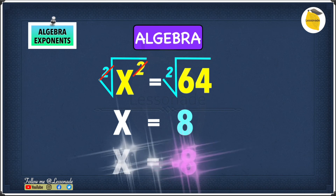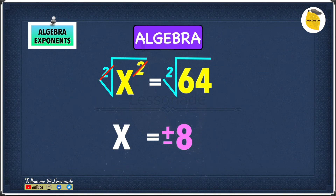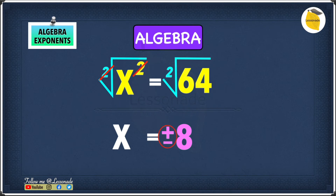So in this example we have two answers: x equals 8 and x equals minus 8. You may wonder which is correct — the answer can be both, because x equals 8 gives 64 and x equals minus 8 also gives 64. When you have a situation like this with one positive and one negative answer, you write x equals plus or minus 8. So our answer to this question is x equals ±8.